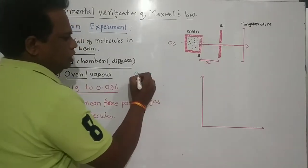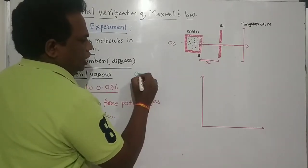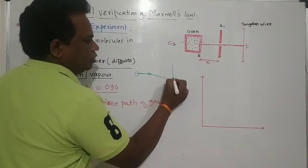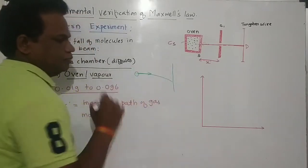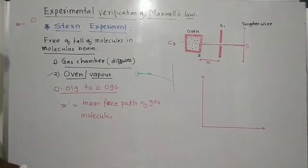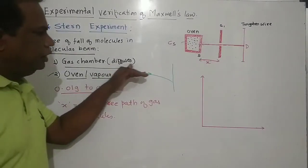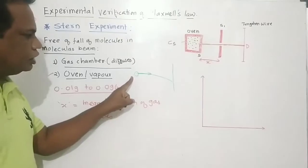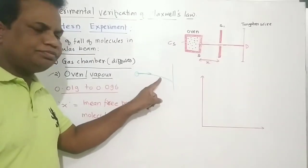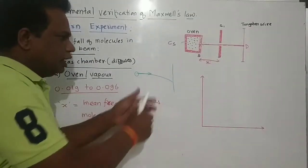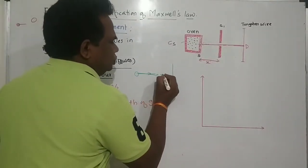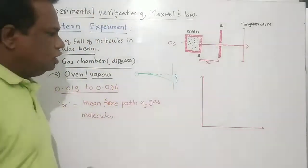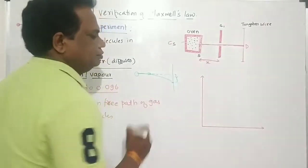The horizontal velocity is maintained but due to gravity, the molecules follow a curved path. Molecules with lower speed will be deflected more by gravity, while those with higher speed will be deflected less.